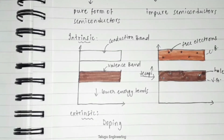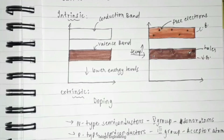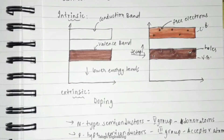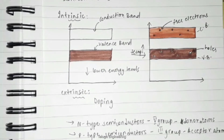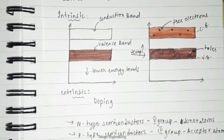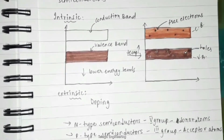In a p-type semiconductor, trivalent impurities from the third group elements are added. Trivalent impurities like aluminum, indium, and gallium are added to the intrinsic semiconductor. The trivalent impurities provide extra holes, known as acceptor atoms. The majority carriers in a p-type semiconductor are holes. This covers the key aspects of intrinsic and extrinsic semiconductors.